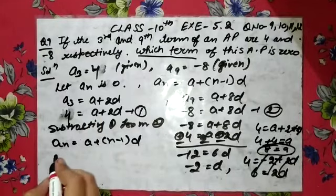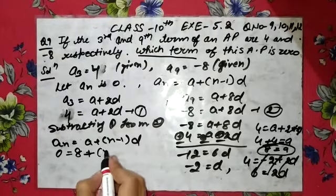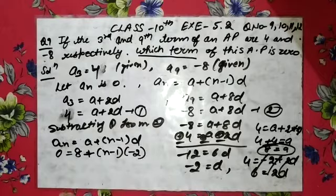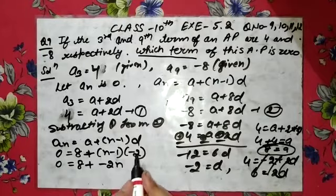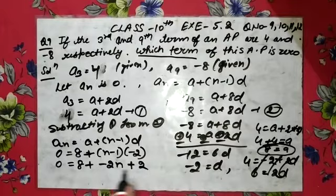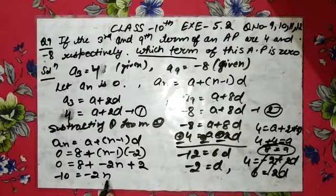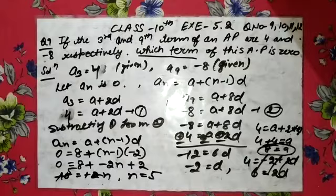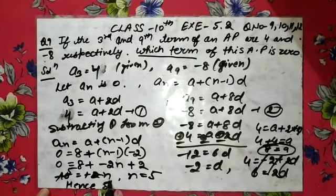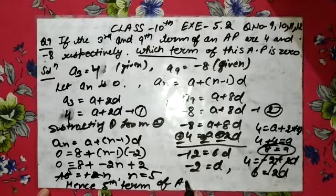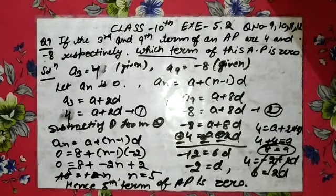Now put a = 8 and d = minus 2 into an = a + (n−1)d, with an = 0. So 0 = 8 + (n−1)(minus 2) = 8 minus 2n + 2 = 10 minus 2n. Therefore minus 10 = minus 2n and n = 5. Hence the 5th term of the AP is 0.